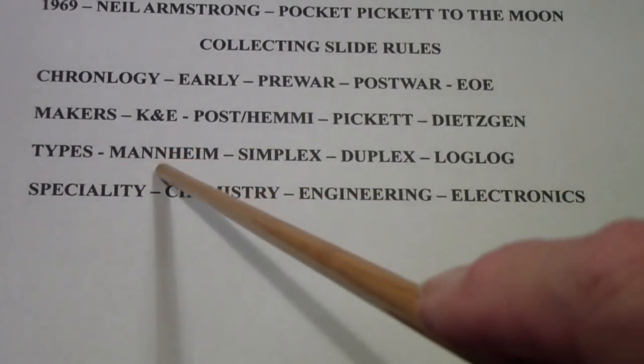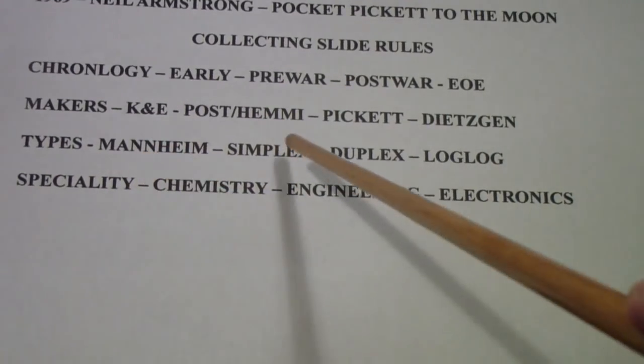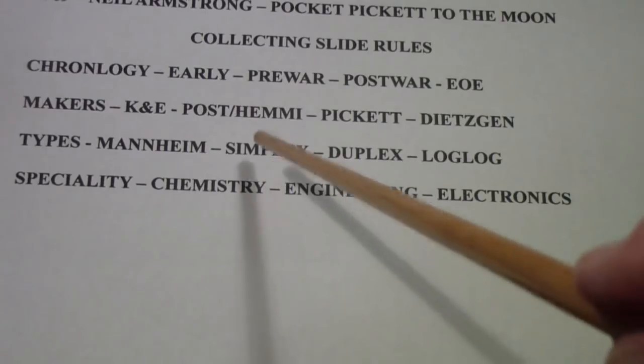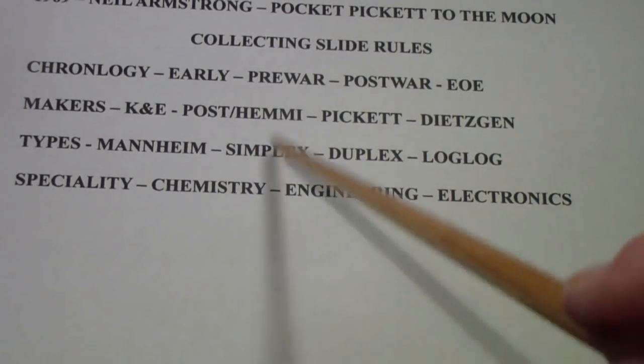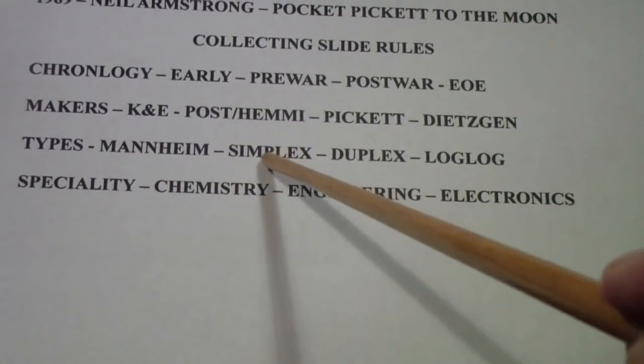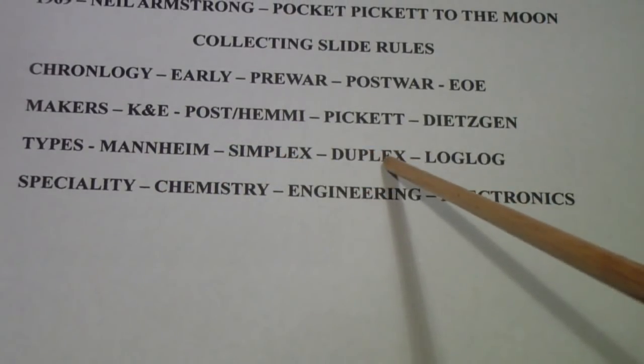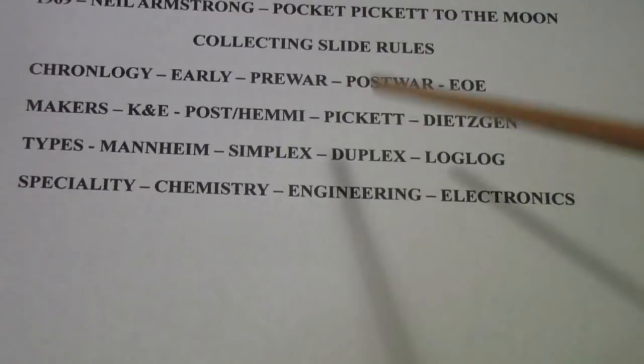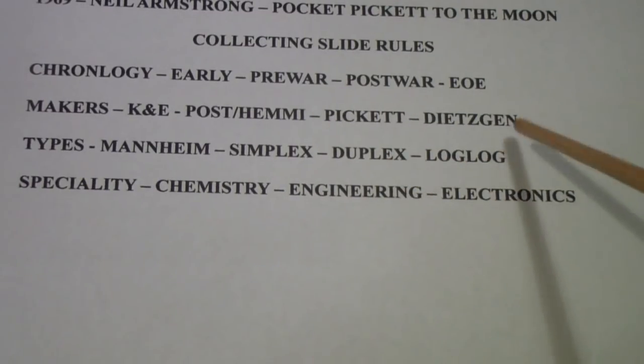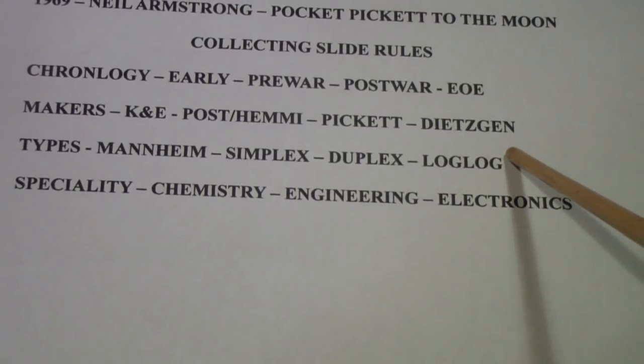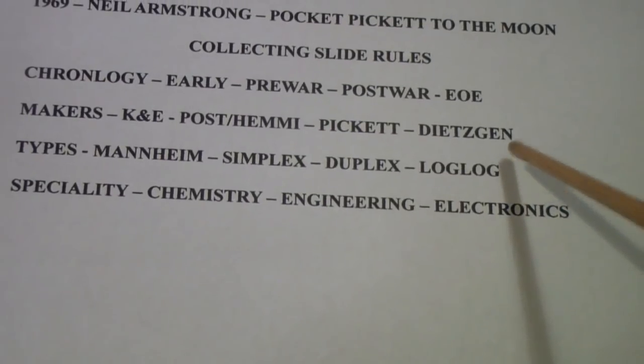There are different types of slide rules. I mentioned the Mannheim. There also is what's called a simplex slide rule, which means that it only has one side. The Mannheim is a type of simplex. Then there is the duplex slide rule, which actually has scales on both sides and a cursor on both sides. There is a specialty group called LogLog that we may not talk about. It's a little specialized. Only engineers are very generally interested in LogLog slide rules.